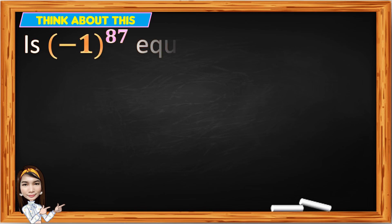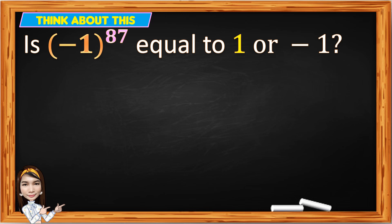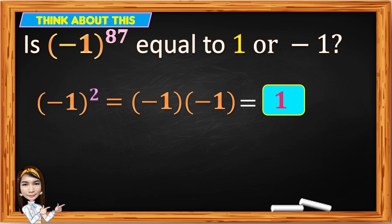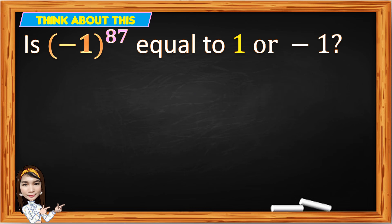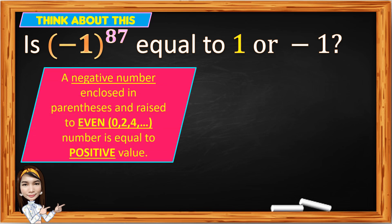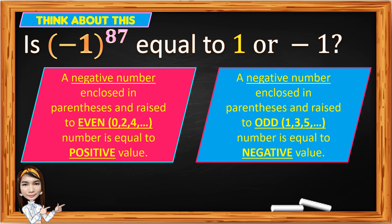Is the quantity of negative 1 to the 87th power equal to 1 or negative 1? The quantity of negative 1 squared equals negative 1 times negative 1, which is positive 1. The quantity of negative 1 cubed equals negative 1 times negative 1 times negative 1 — negative times negative is positive, times negative gives negative 1. A negative number in parentheses raised to an even number gives a positive value; raised to an odd number gives a negative value. So the quantity of negative 1 to the 87th power is equal to negative 1.